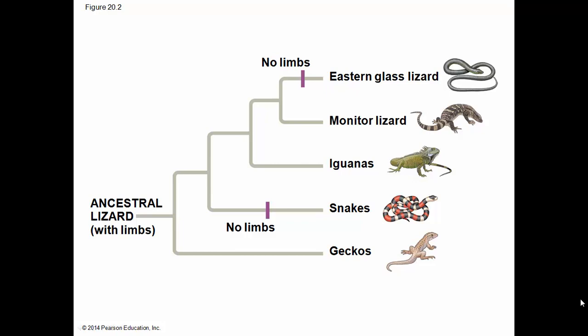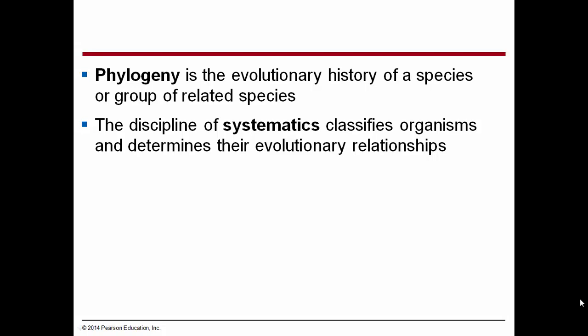Here we look at the characteristics to understand the phylogeny of the Eastern Glass Lizard. We can tell that it's more recently evolved than the snakes. Although both snakes and glass lizards have no legs, they evolved separately. They have traits which are similar, but they have different origins for those traits. Phylogeny is the evolutionary history of a species or group of related species. The discipline of systematics classifies organisms and determines their evolutionary relationships. Through the naming of organisms, we begin to understand their evolutionary relationships.